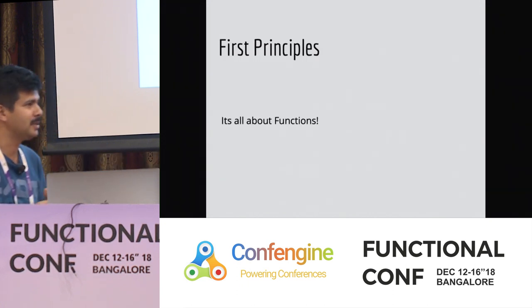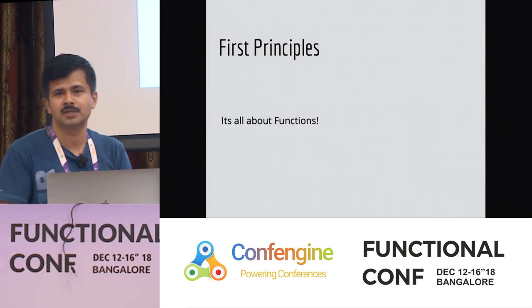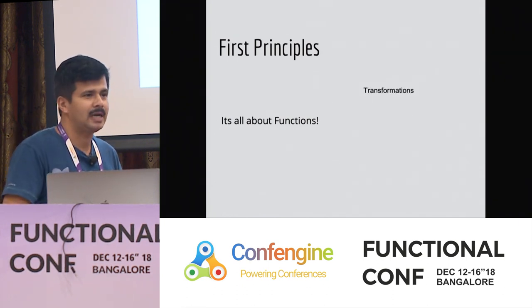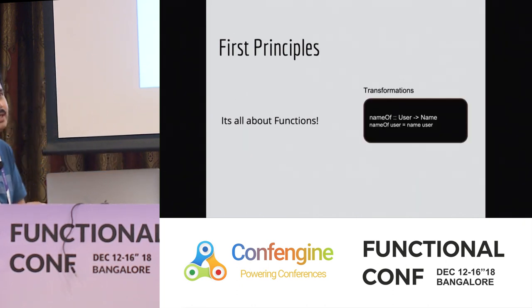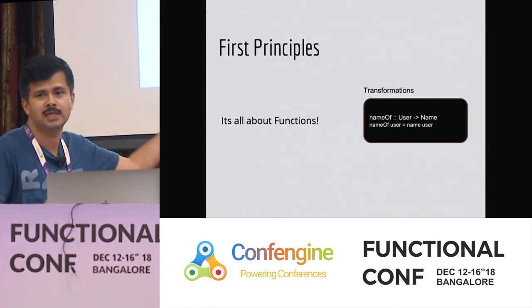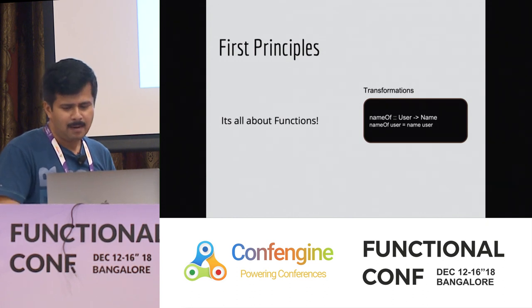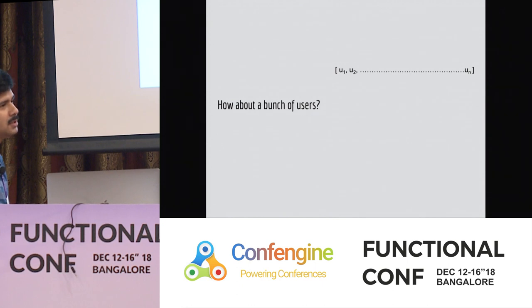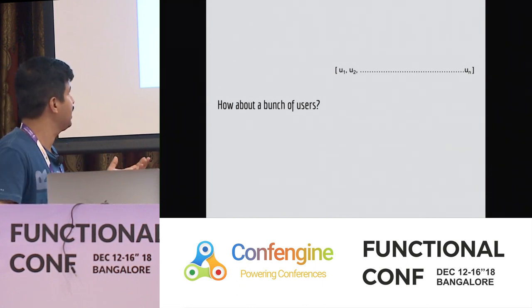So, what are the first principles? There is only one principle — it's all about functions. Most of the solution is a function. Let's go through some transformations. If you have a user and want to find a user's name, that's some basic code where you get the name from the user. But what if you have to do it for a bunch of users? You have a list of users and you want to get those users' names.